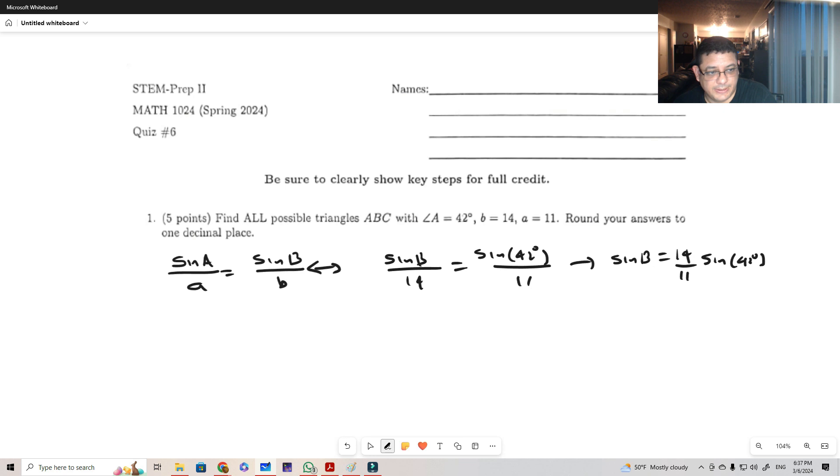It is important that we verify that this is a number that is not bigger than one. Fortunately here, sine of 42 is something that is going to compress the value of the 14 so that the top is less than the bottom and this is less than one. Nevertheless, we do B equals sine inverse of this quantity, 14 sine of 42 over 11, and this is going to produce initially B to be 58 degrees.